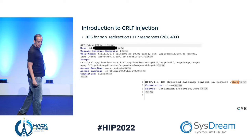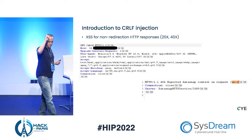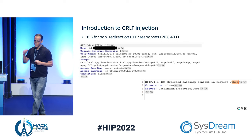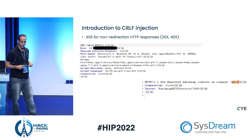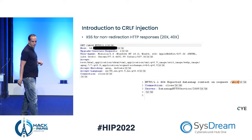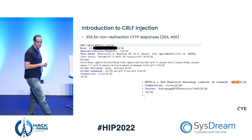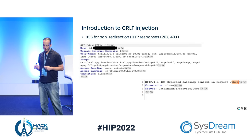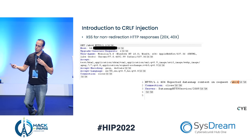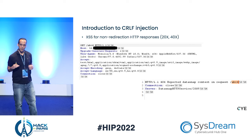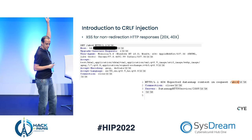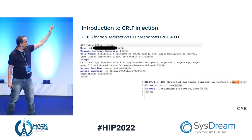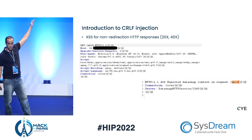You can see in the HTTP request, when I enter ABCD, the response contains the word ABCD as part of the HTTP response. But whenever I enter the combination %0D %0A — this is the CRLF combination, carriage return and line feed — these are the two characters that form a newline. So whenever I enter this in the request, I can see that in the response I have ABCD, then a newline, and another ABCD.